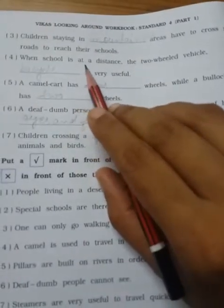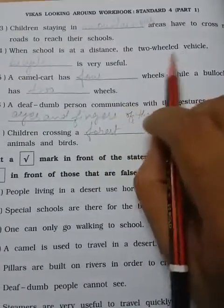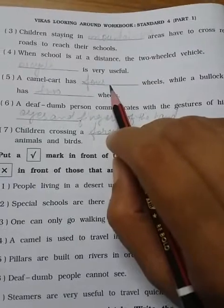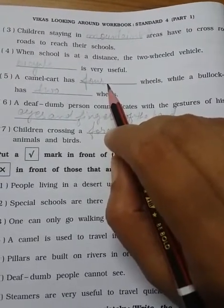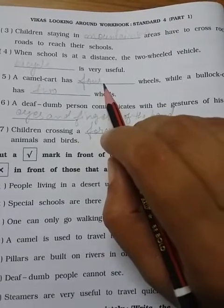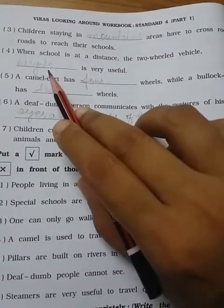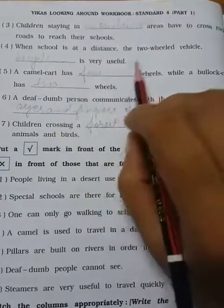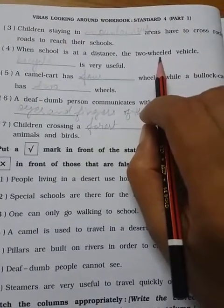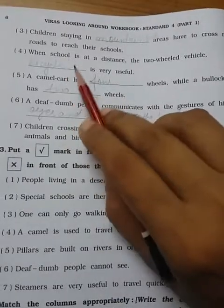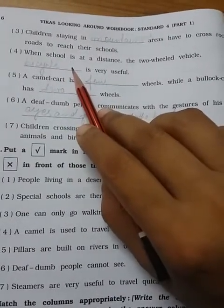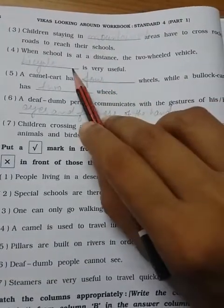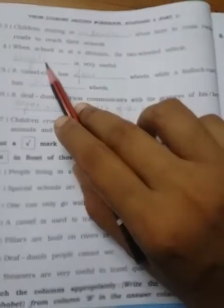When school is at a distance, the two wheeler blank is very difficult. If your school is 50 kilometers or 10 kilometers, how you will go there? By auto rickshaw only. You cannot use your bicycle because you are now in fourth standard, you are still small. So you cannot use your bicycle. You need two wheeler. Two wheeler means scooty or bike like that. But you cannot use this two wheeler because it is far away, so you cannot go walking.